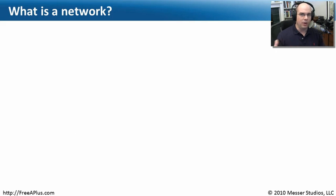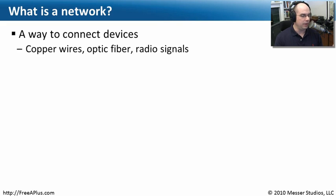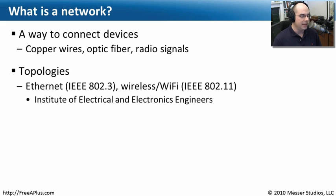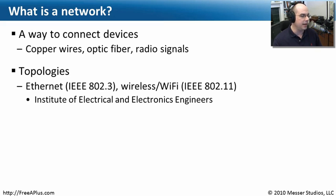Before we get into what all of these devices are and all of these methods of communicating, let's talk about what a network is. We've already done a few modules on networking, but what really is a network? At the end of the day, it's how we connect all of these different devices together. They have to be able to communicate over some method — sometimes a copper wire, sometimes fiber optics, sometimes wirelessly. The way that we determine how we're communicating is over a topology, and a topology is just a simple network type.